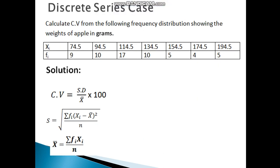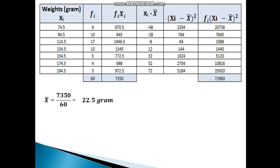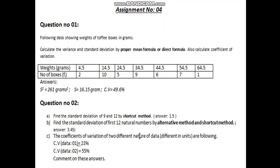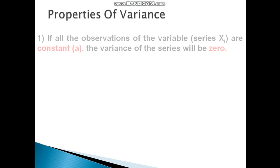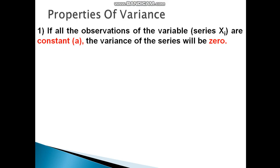Now for the second series — the discrete series. We look at the properties of variance. The first property: if all values of the variable Xi are constant, the variance of the series will be zero. Variance equals zero.